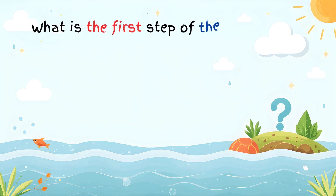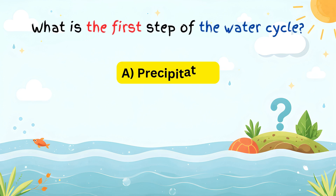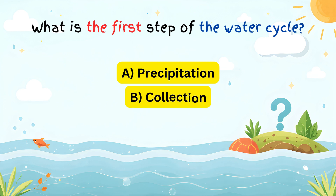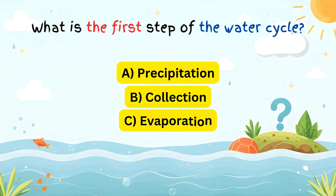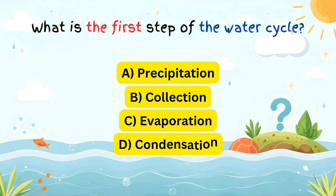What is the first step of the water cycle? A) Precipitation. B) Collection. C) Evaporation. D) Condensation.